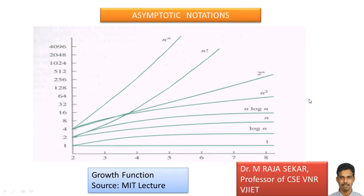In this lecture, we will try to understand asymptotic notations. In order to understand asymptotic notations, first we will analyze what is a growth function. In the context of growth function: log n dominates n, n dominates log n, n log n dominates n, n square dominates n log n, 2 power n dominates n square, n factorial dominates 2 power n, and n power n dominates n factorial. This need not hold for all n — if it holds after some stage, it is enough for us.